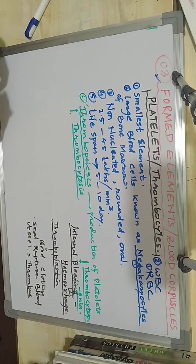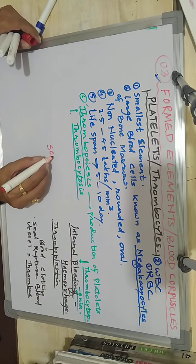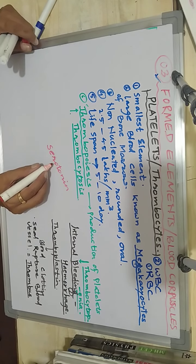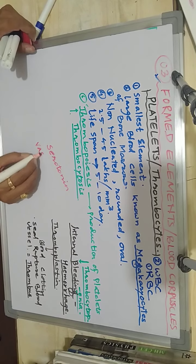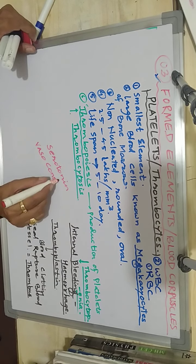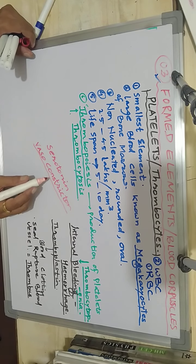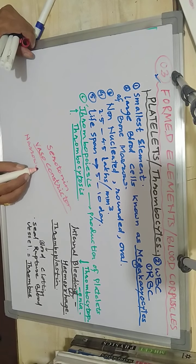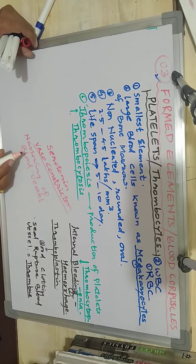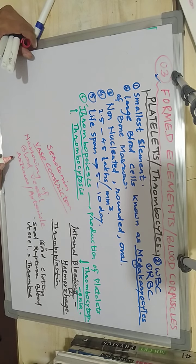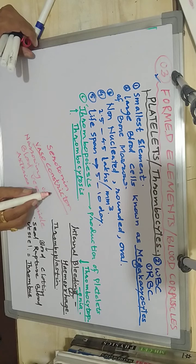Platelets also help to secrete a chemical called serotonin. This serotonin acts as a vasoconstrictor, which is a biological term meaning the narrowing of blood vessels, particularly in large arteries and arterioles. This narrowing helps to reduce blood flow.